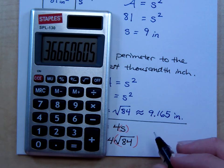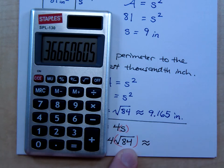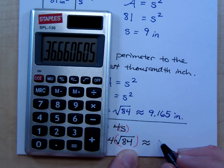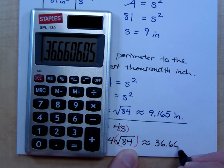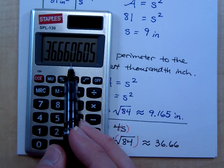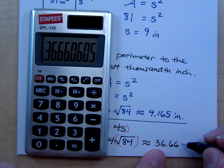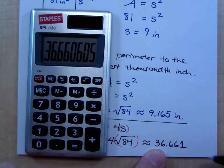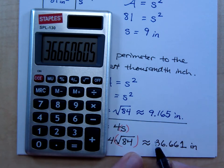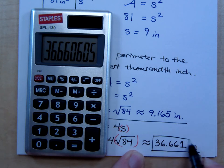So rounded to the nearest thousandth inch, this is about how many inches? What is it? Here's your thousandth spot right here. Does it stay the same or round up? It's going to round up. So it's going to round up to be 36.661. So make sure you keep your units here. So the perimeter is about 36 and 661 thousandths inches.